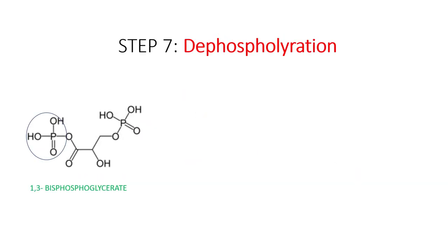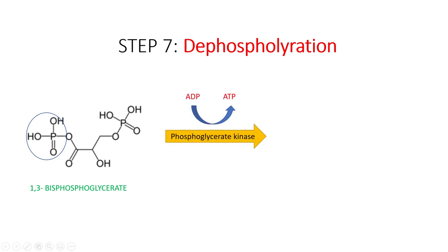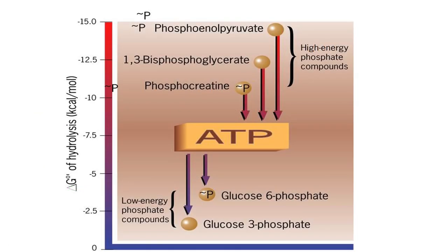The next enzyme, phosphoglycerate kinase, catalyzes the transfer of phosphate from 1,3-bisphosphoglycerate to ADP. The product of this reaction is 3-phosphoglycerate and one ATP molecule. The reason phosphate is transferred to ADP is that 1,3-bisphosphoglycerate has higher energy than ATP and therefore has a higher potential for phosphate transfer.